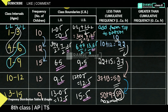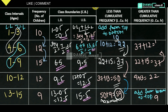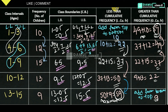Greater than cumulative frequency: add from bottom to top. Take 9 as it is, then 9 plus 13 equals 22, then 22 plus 15 equals 37, then 37 plus 12 equals 49, then 49 plus 10 equals 59. These are the greater than cumulative frequencies for the corresponding class intervals. Maximum value 59 is at the first class interval.